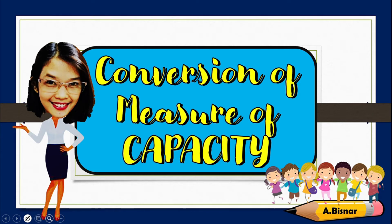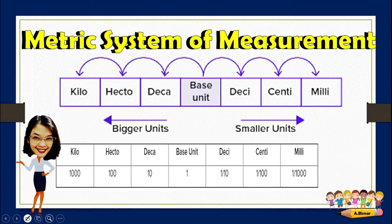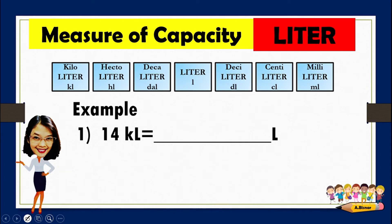This lesson is about conversion of measure of capacity and we're going to use the metric system of measurement. In measure of capacity, the basic unit is the liter. kL stands for kiloliter, hL for hectoliter, daL for decaliter, L for liter, dL for deciliter, cL for centiliter, and mL for milliliter.